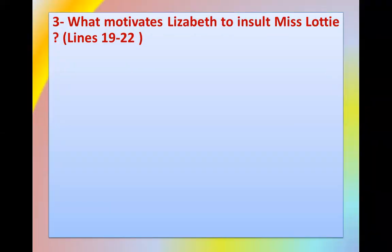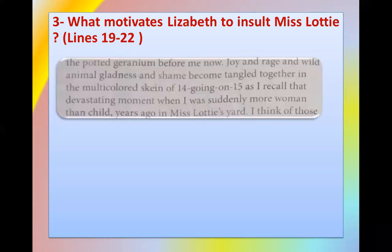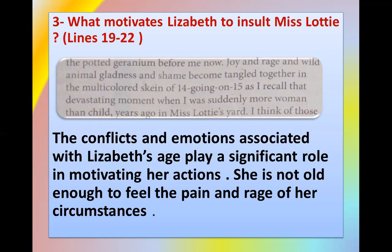Number three: what motivates Elizabeth to insult Miss Lottie? Think about the motivations of the characters. You'll find the answer between lines 19 to 22. Focusing on the third line, we find the multicolored context of being 14 going on 15 — 'the fleeting moment when I was suddenly more woman than child.' The conflicts and emotions associated with Elizabeth's age play a significant role in motivating her actions. She is between 14 and 15 years old, not old enough to fully feel the pain and rage of her circumstances.